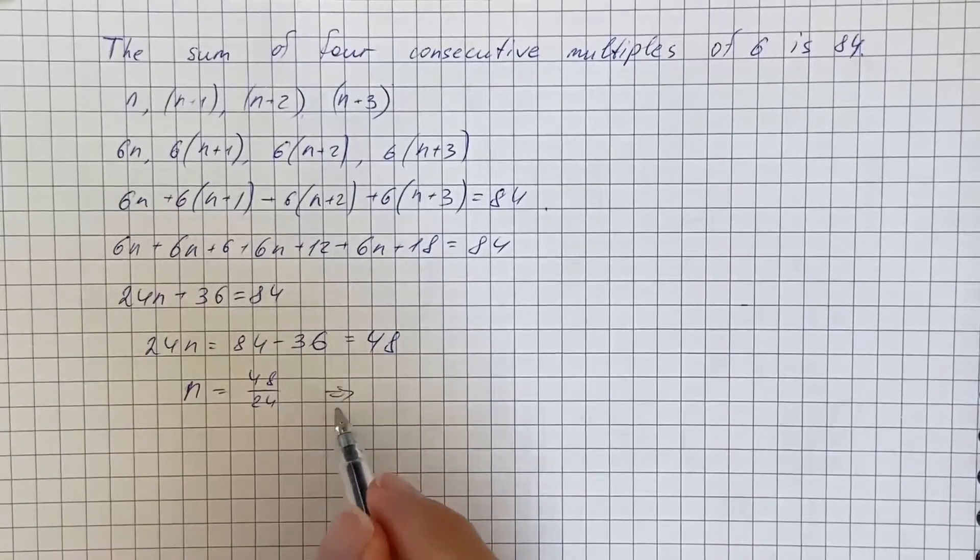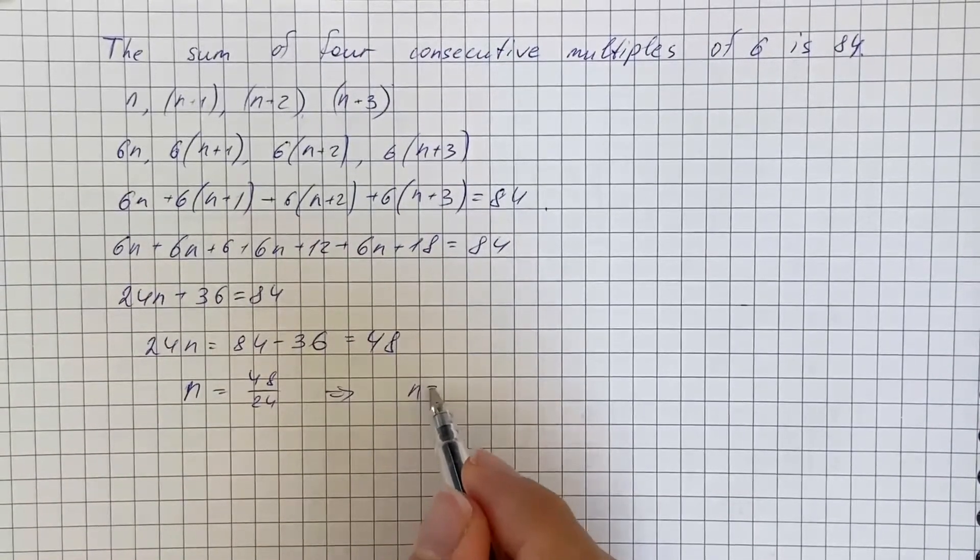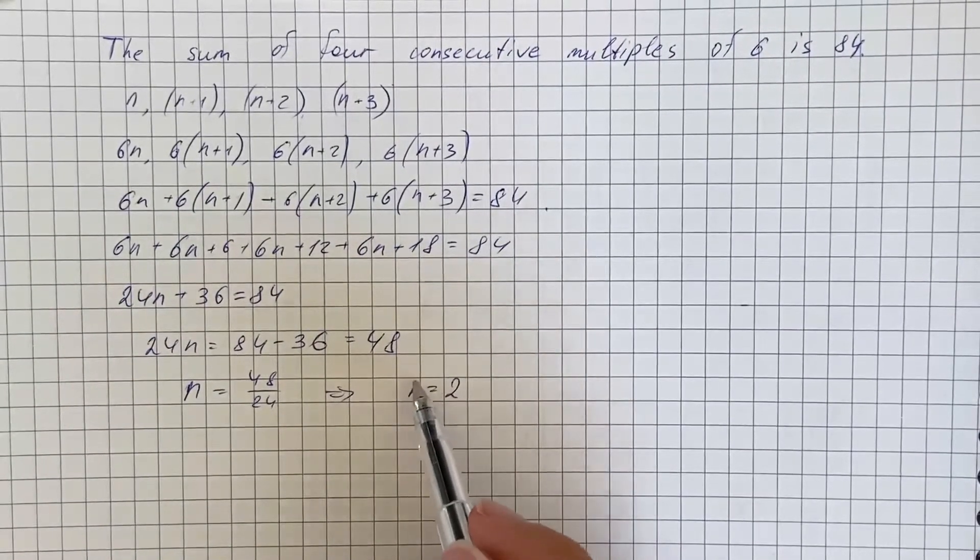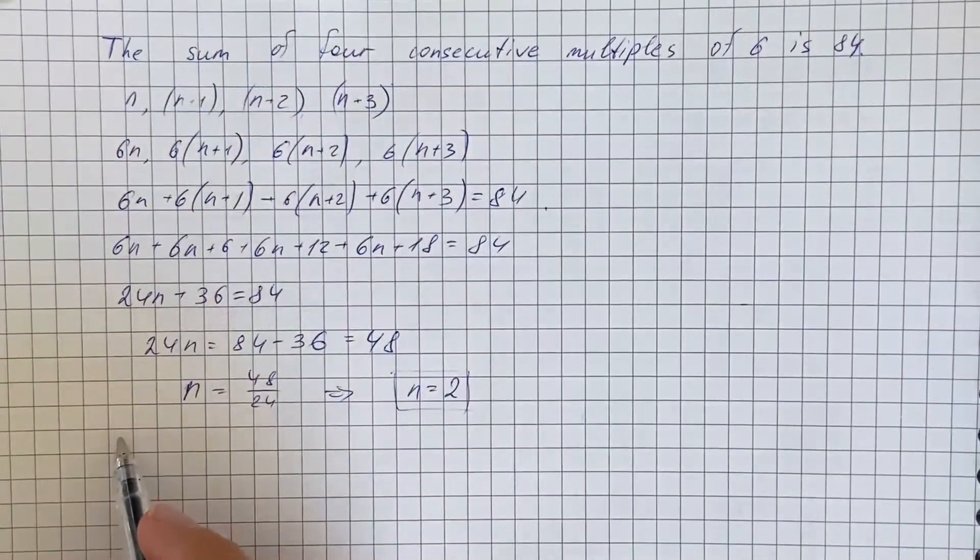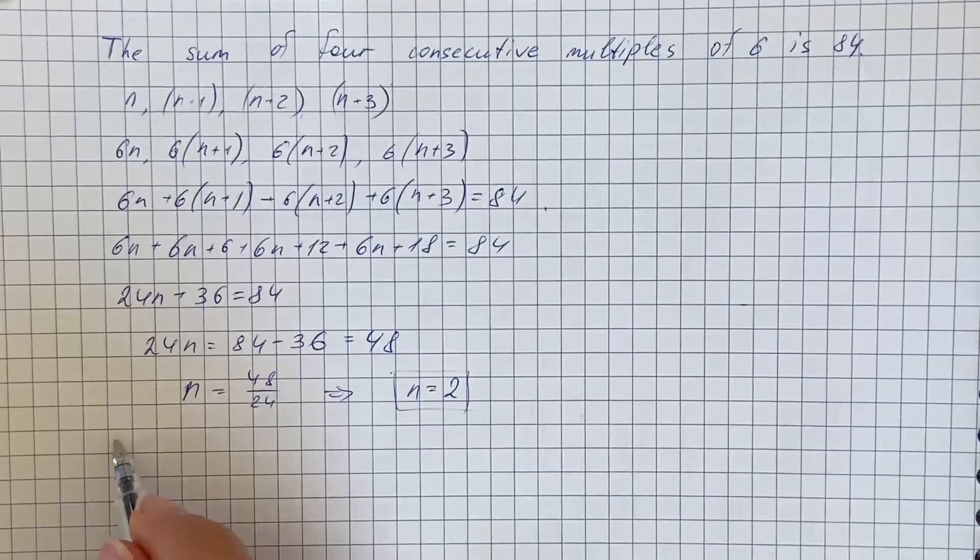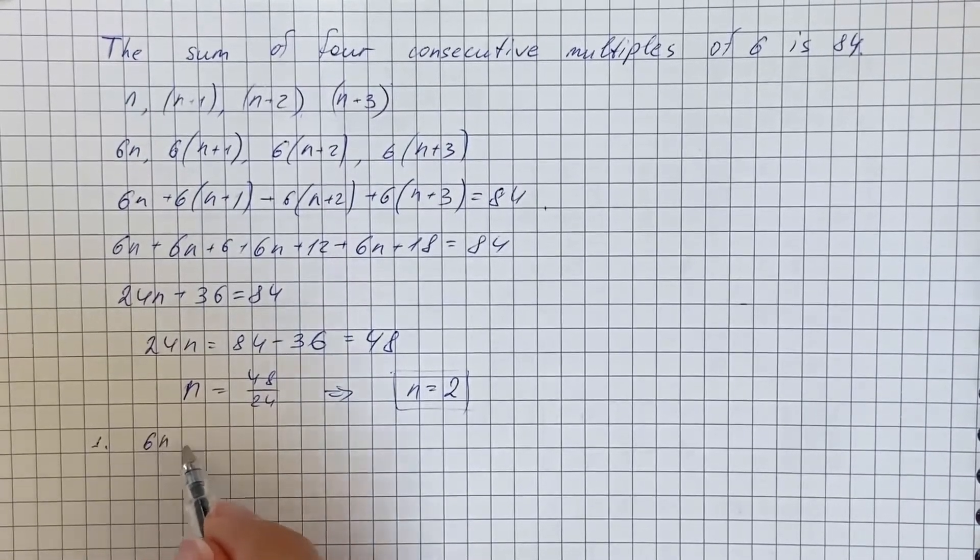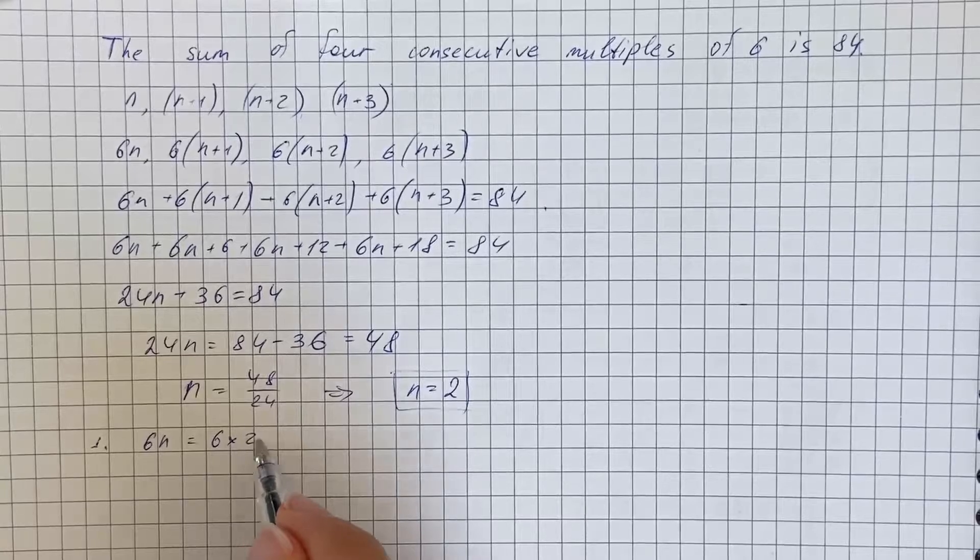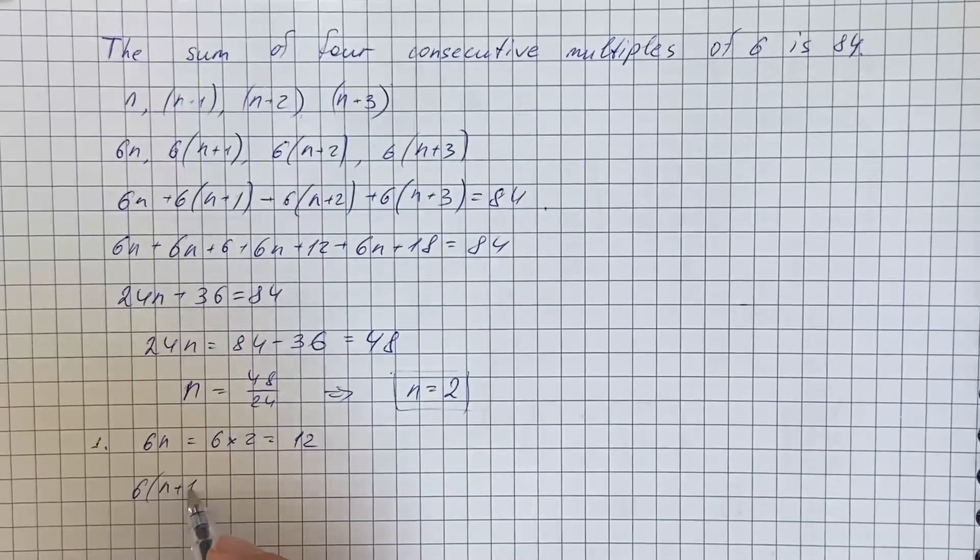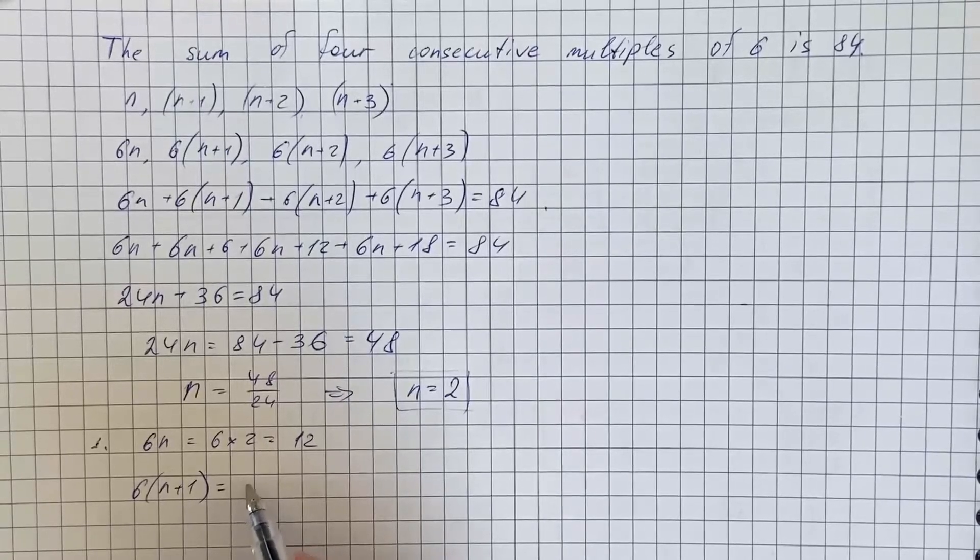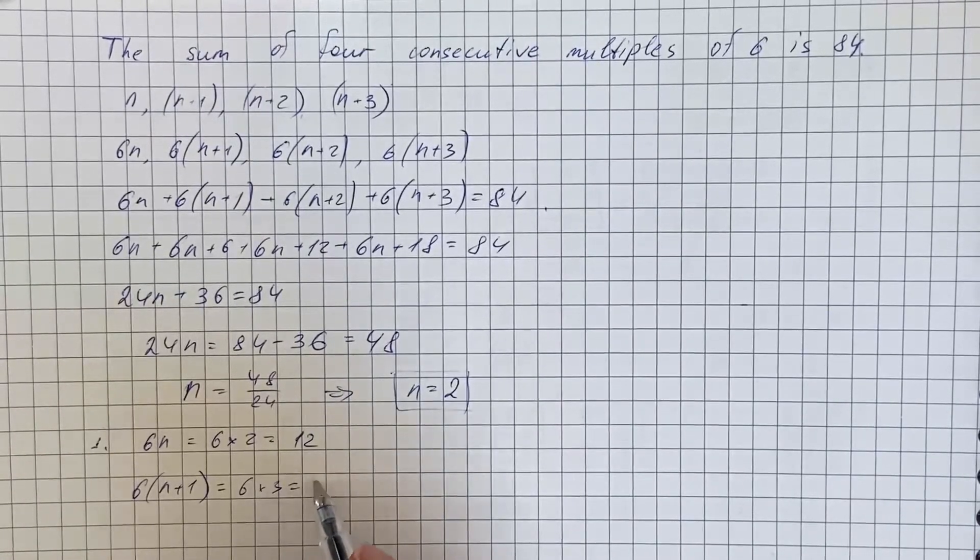So now we're going to substitute n equals 2 in each multiple, and we get that 6 times n, that's 6 times 2, equals 12. Then 6 times n plus 1, that's 6 times 3, equals 18.